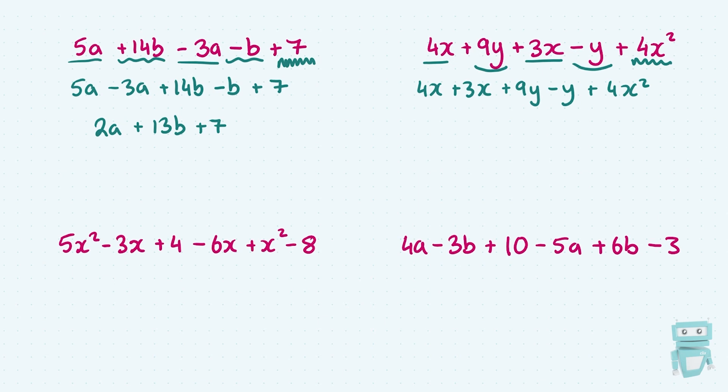Now, x squared and x are different because x is x, and an x squared is an x squared. They're not the exact same thing. They're similar, but they're not the same, so they're treated totally different. So now I just tidy up. I'm going to put my 4x plus 3x together to give me 7x. And then I have my plus 9y minus y to give me plus 8y. And then I have plus 4x squared tagging along there at the end. So again, x squared and x are two different entities, so we treat them as such.